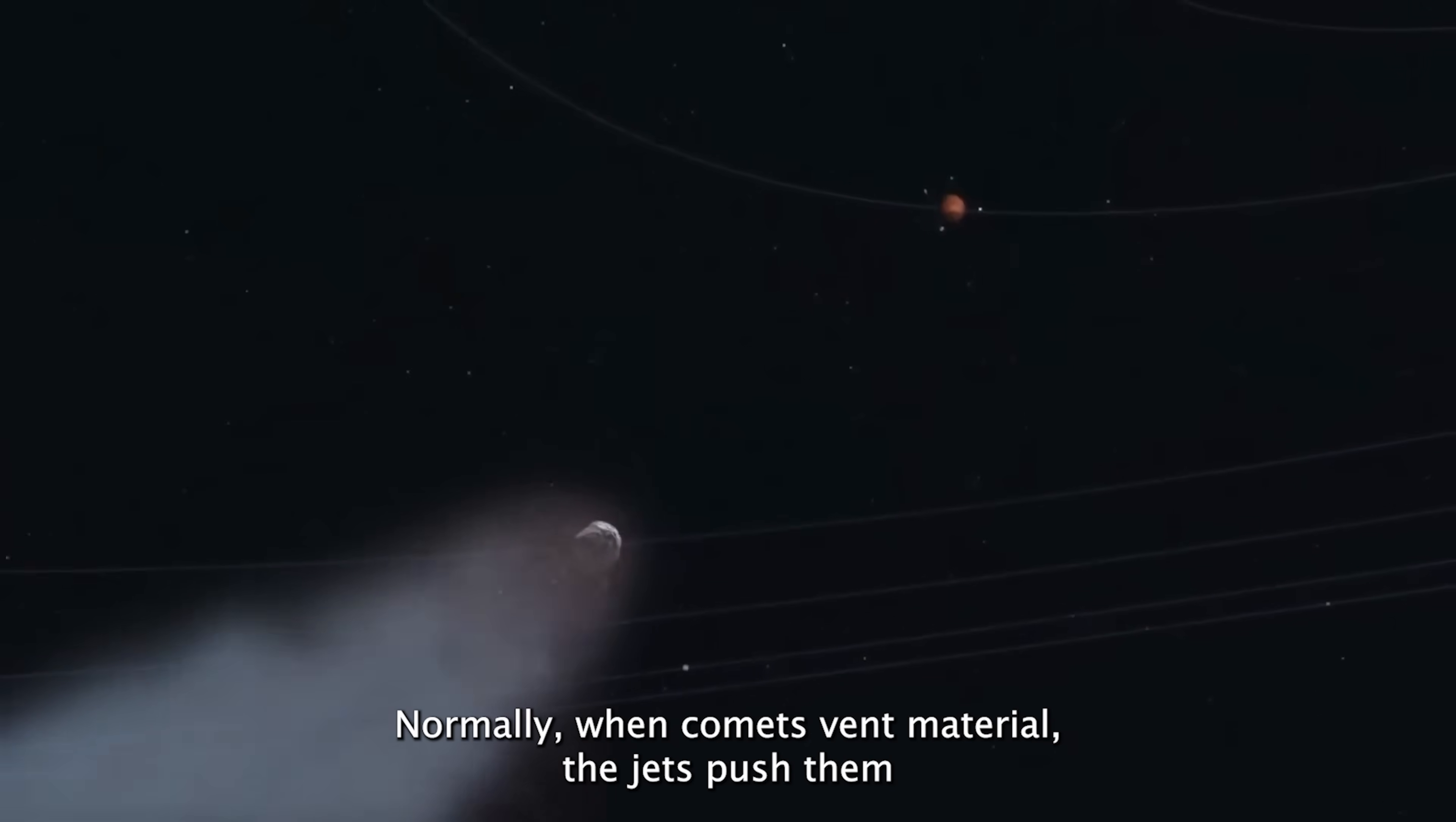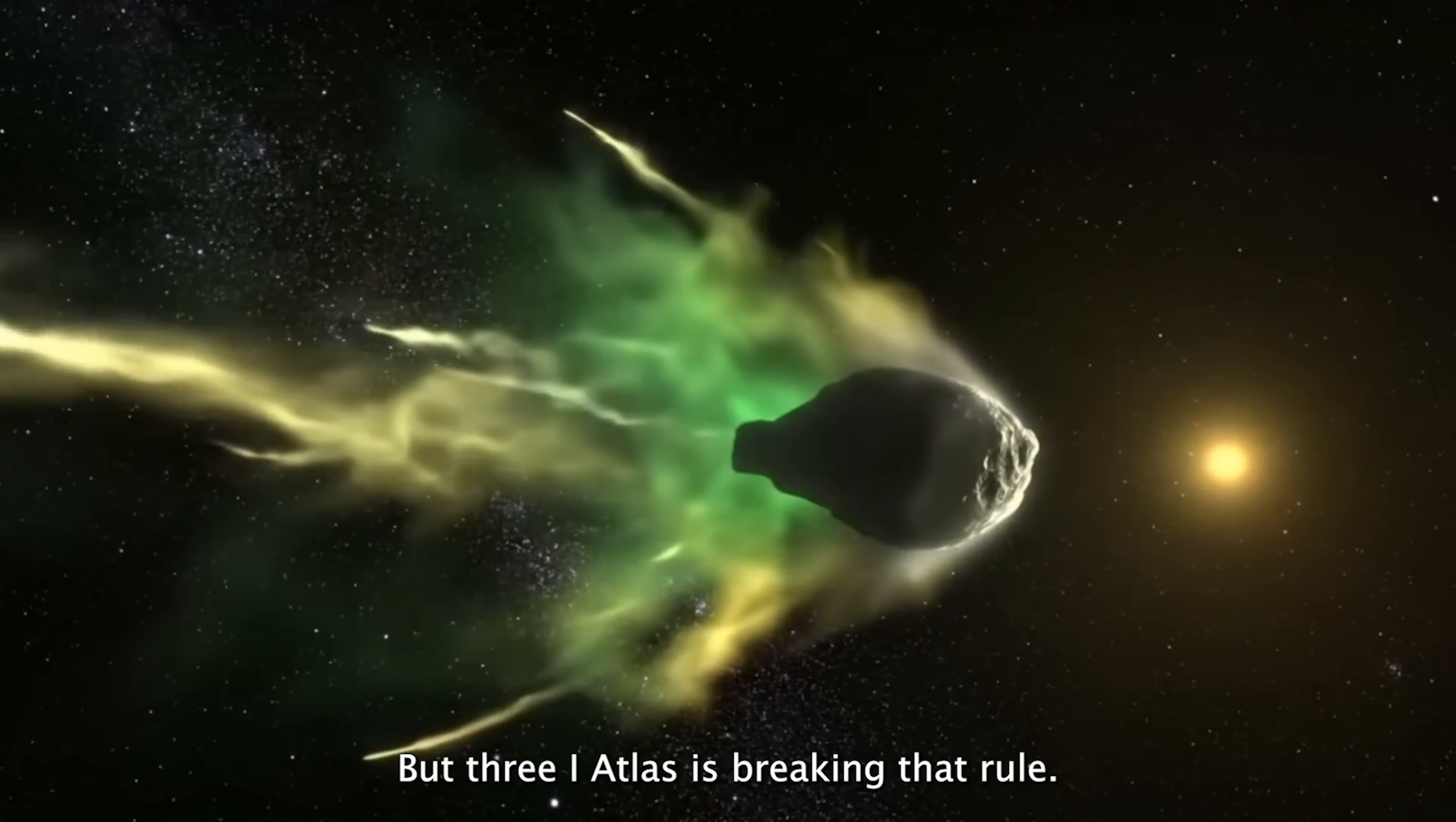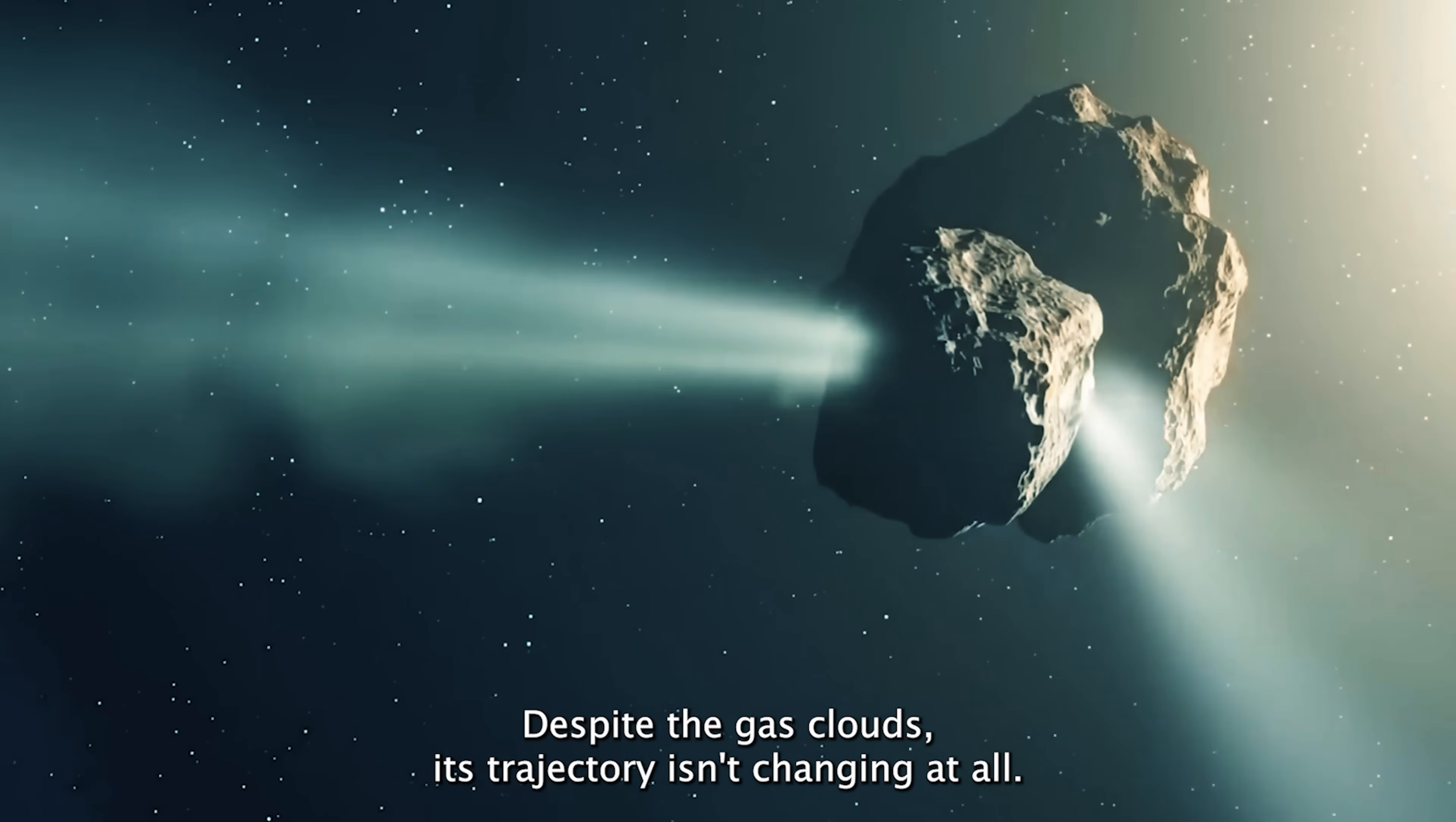Normally, when comets vent material, the jets push them slightly off their predicted paths, like a spacecraft firing tiny thrusters. But 3i Atlas is breaking that rule. Despite the gas clouds, its trajectory isn't changing at all.